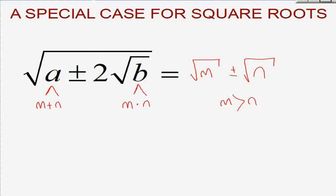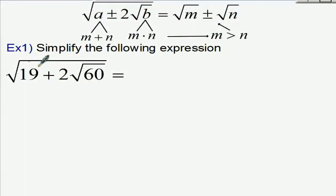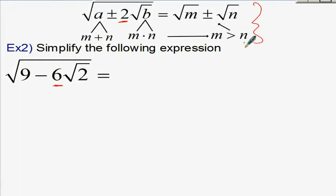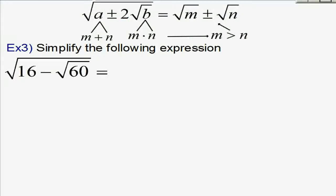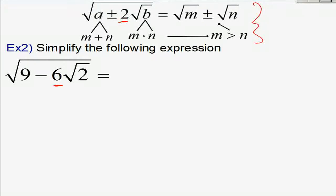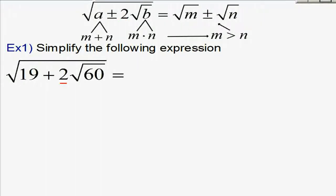Type 1 is square root of 19 plus 2 times square root of 60 — we can use the rule directly. Type 2 is square root of 9 minus 6 times square root of 2 — we can't use the rule directly because the number before the second root is not 2; there must always be a 2. In Type 3 and Type 4, we don't have any number in front of the second root.